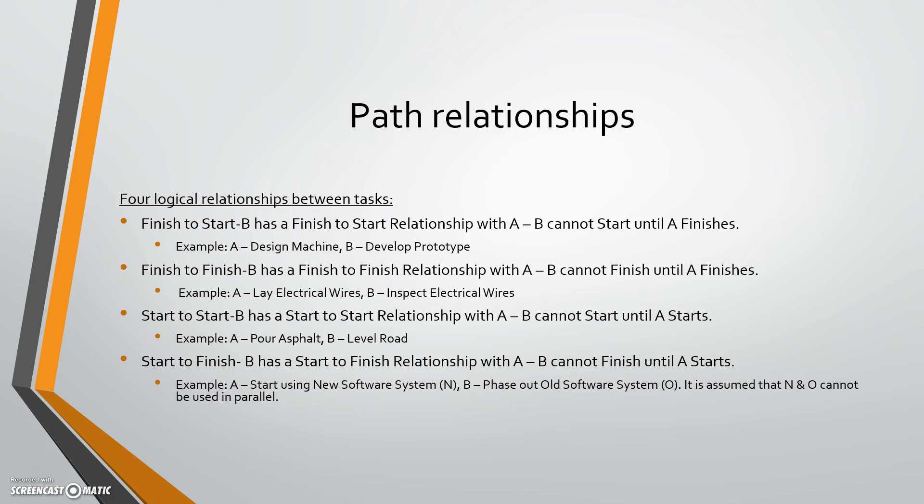With the critical path, there are four relationships I want to briefly talk about: finish-to-start, finish-to-finish, start-to-start, and start-to-finish. Finish-to-start means B cannot start before A finishes. For example, A is designing the machine and B is developing the prototype — you really cannot start developing the prototype until you have the machine designed.